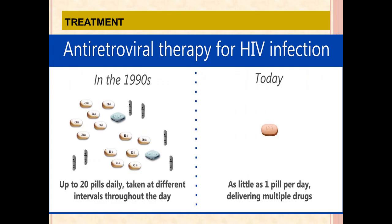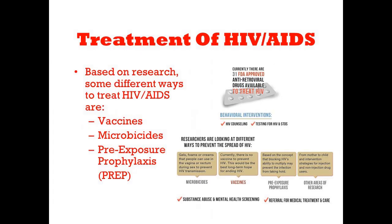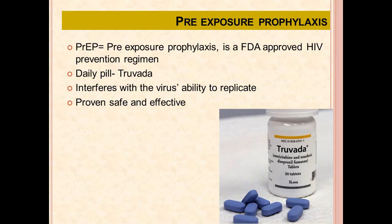Treatment for HIV is antiretroviral therapy (ART). In the 1990s, up to 20 pills were taken daily; today, as little as one pill is needed. Treatment modes include vaccines, microbicides, and pre-exposure prophylaxis (PrEP). PrEP is an FDA-approved HIV prevention regimen — a daily pill called Truvada — which interferes with the virus's ability to replicate and is proven safe and effective.